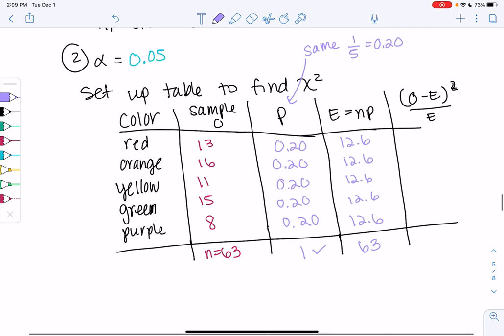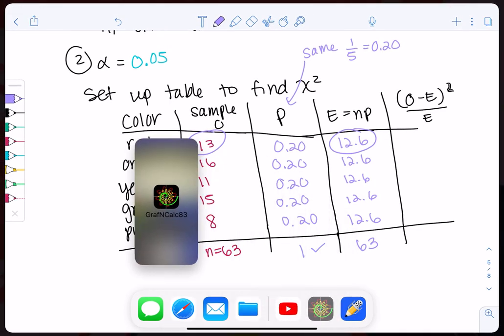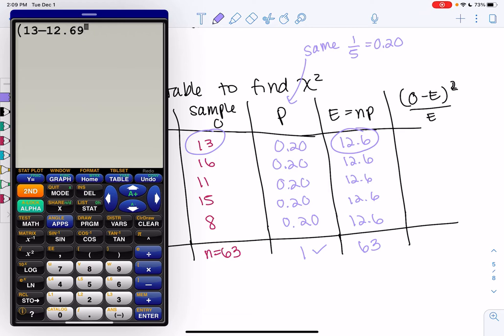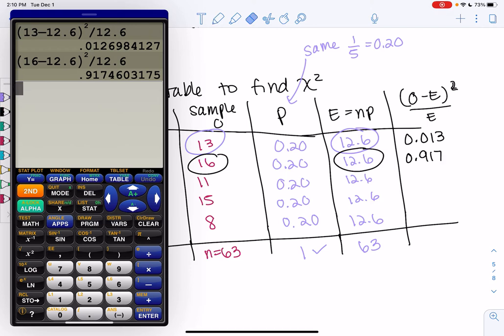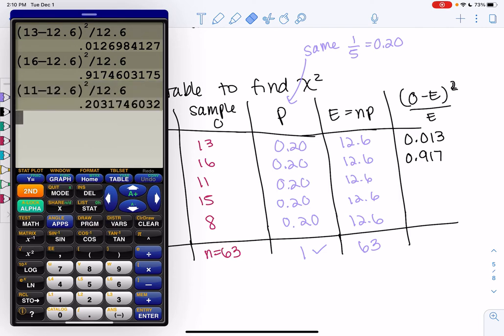We're going to do O minus E squared. So 13 minus 12.6 squared, make sure it's in parentheses, and divide by 12.6. So our first little mini z score will be 0.013. And then our next one will be 16. What's nice is E doesn't change. Minus 12.6, square that, divide by 12.6 and you should get 0.917. Then we'll keep going. So next row for yellow, we'll do 11, and get 0.203.